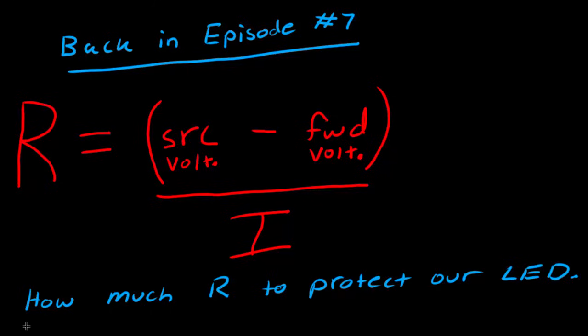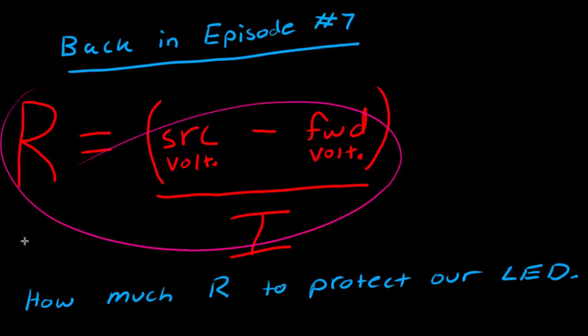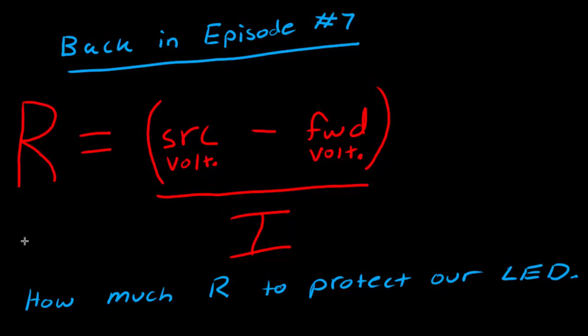Now in Episode number 7, we were trying to find how much resistance we would need to protect our LED inside of a circuit. And we used this equation right here to calculate that. So we said that the resistance value in ohms, the value of resistor that we would need to put in our circuit to protect the LED is equal to